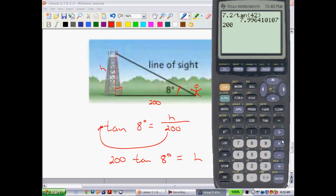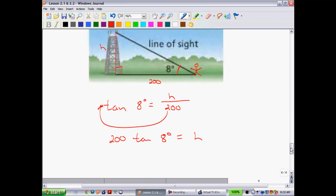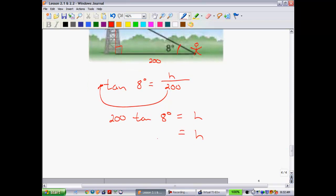We'll put this into our calculator. So if we get 200, 200 should be times the tangent of 8 degrees, we find out that that tower is approximately 28 meters tall. So the height is approximately 28 meters, like so.